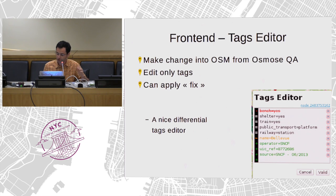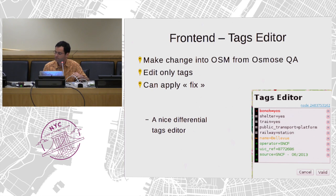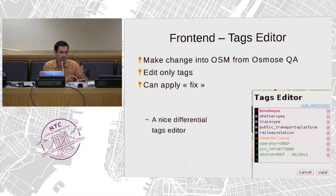With this tag editor, you can change the name, add a tag, or remove one. There is a column — it's a differential editor. It's a nice feature; I think I would like to have something like this in JOSM. When you're done on the field, you can save and it creates a changeset.